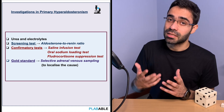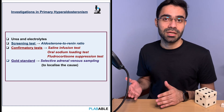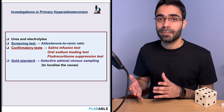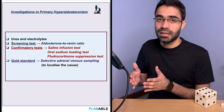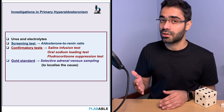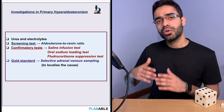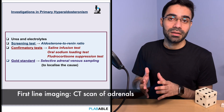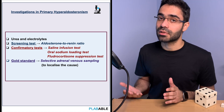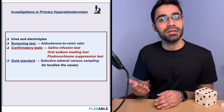Confirmatory tests, though less commonly used in clinical practice, include the fludrocortisone suppression test and the salt loading test. In these tests, giving exogenous salt for a couple of weeks should normally suppress plasma aldosterone levels, but in hyperaldosteronism the aldosterone remains elevated, confirming the diagnosis. For localizing the cause, CT of the adrenal glands is the investigation of choice to identify an adrenal adenoma or carcinoma. The gold standard for localizing the source is adrenal venous sampling.